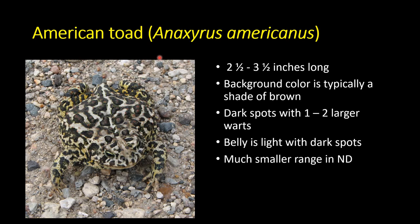The American toad, Anaxyrus americanus, is about the same size — two and a half to three and a half inches long. Background color is typically cream to brown with dark spots. American toads tend to have fewer warts within their spots — typically one to two rather than one to three or more. The belly is light or cream but is spotted. They historically had a small range in eastern North Dakota but haven't been found here probably since 2015; they're likely extirpated, though quite common in Minnesota lake country.